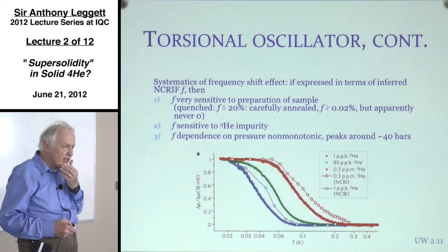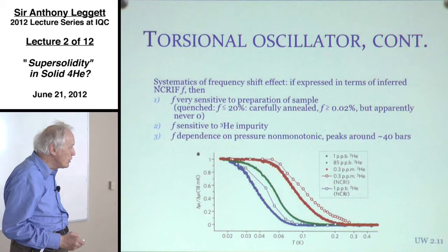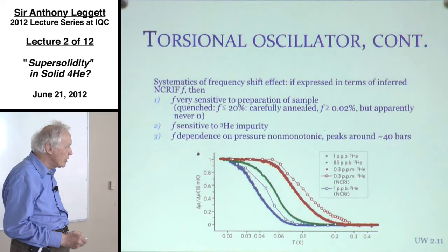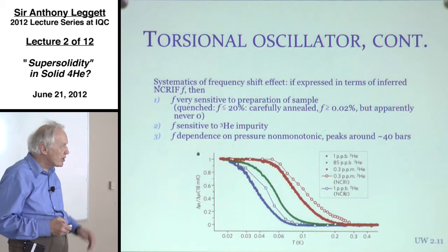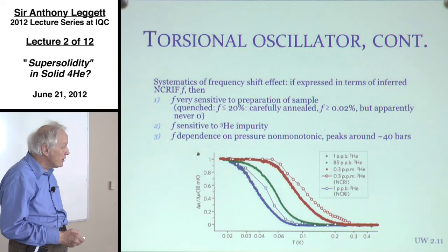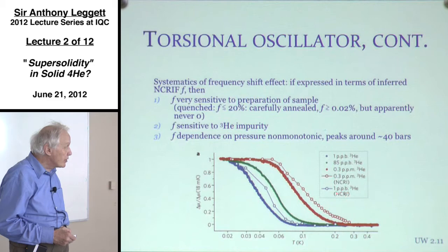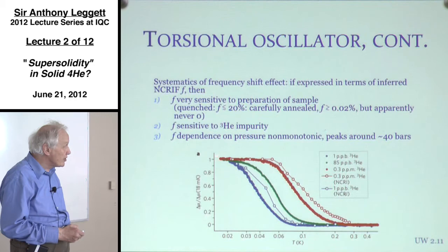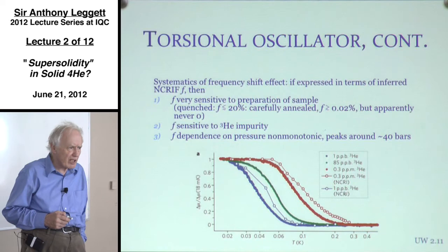The second point is that f is very sensitive to helium-3 impurity — and rather surprisingly, introducing helium-3 impurity tends to increase the effect, contrary to what one might first guess. With 0.3 parts per million of helium-3 (essentially natural abundance in commercial helium-4), the effect occurs at higher temperatures. If you purify down to one part per billion, the effect occurs at a much lower temperature but with essentially the same magnitude. More helium-3 means a better NCRI effect.